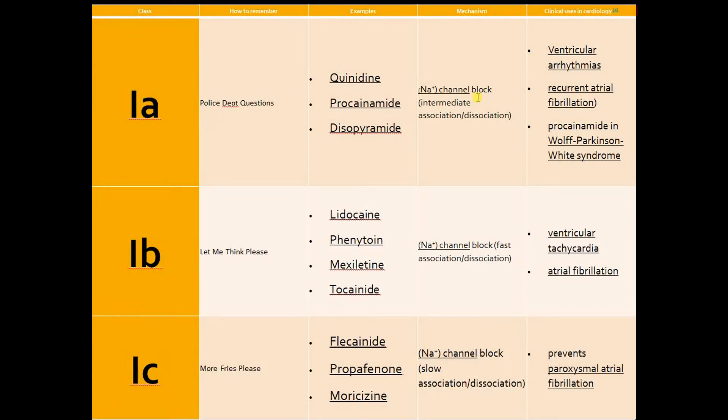Class 1C is probably more commonly used. It includes flecainide, propafenone, and moricizine. The mnemonic to remember is 'More Fries Please' - moricizine, flecainide, propafenone. These act on slow sodium channels and are primarily used for atrial fibrillation rather than ventricular arrhythmias.